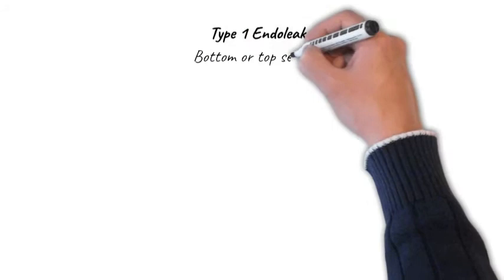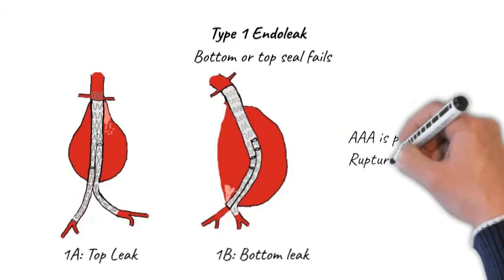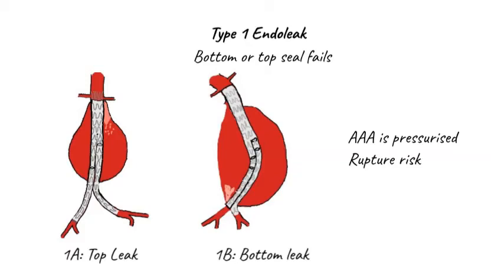Type 1 endoleaks occur when there is a leak either at the top or the bottom of the endograft. In a type 1A endoleak, the leak is at the top of the graft in the aorta — remember, A for aorta. In a type 1B endoleak, the leak is at the bottom in one of the iliac seal zones — remember, 1B bottom leak. The significance is that the aneurysm sac remains pressurised, so they still carry the same risk of rupture as if the aneurysm had never been treated.